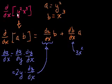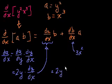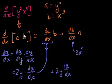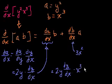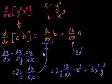So our final answer: the derivative with respect to x of y squared times x to the third equals 2y dy/dx times x to the third, plus 3x squared times y squared. The 2y dy/dx comes from the chain rule applied to y squared, and 3x squared is the straightforward derivative of x to the third. This shows that implicit differentiation is really just applying the chain rule.